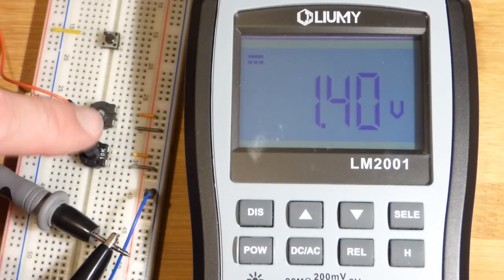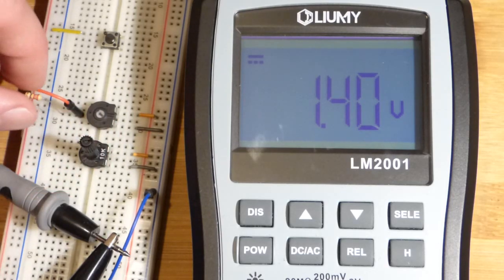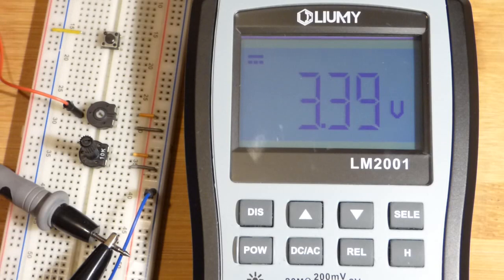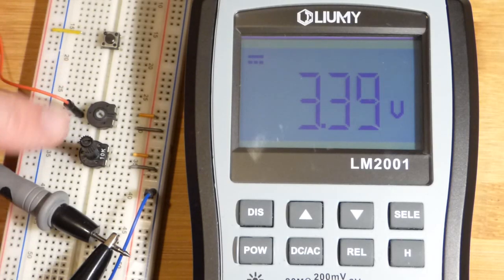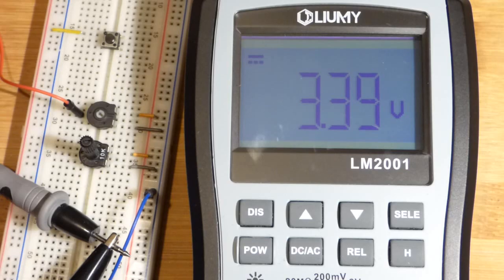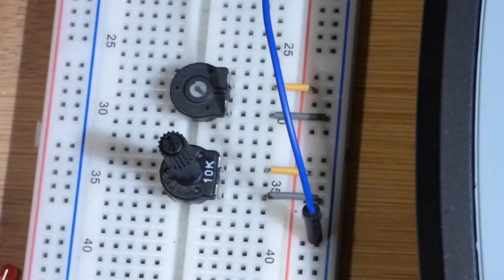And you're going to see that we lost even more voltage. It would be even more dramatic with this one because it has a higher resistance. But in any case, there you can see you're going to see the voltages being output by these two trim pots.